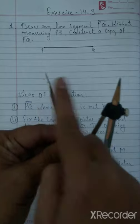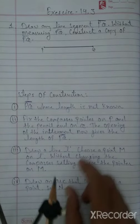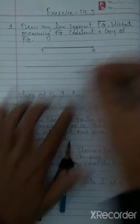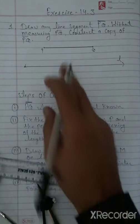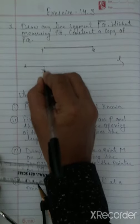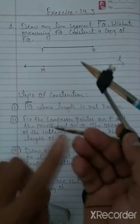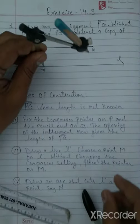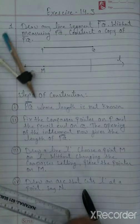In Step 3, draw a line l. Here I am drawing line l. We choose a point M anywhere on line l. Without changing the setting of the compass, we put the pointer on point M and cut an arc on line l.